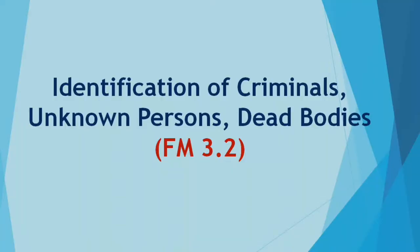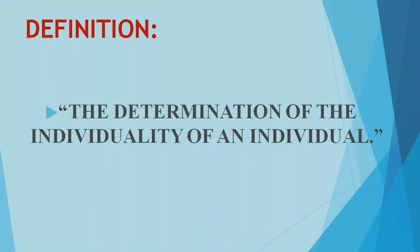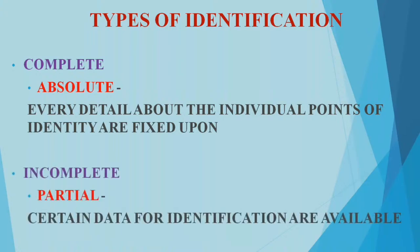Identification is nothing but the individuality of an individual. You determine individuality by its characters, features, and various parameters to confirm that a particular individual is a specific person. It could be absolute — confirming identity 100% — or it could be incomplete or partial, where you are not fully asserting whether the individual is the same or not.